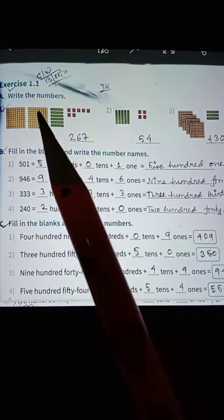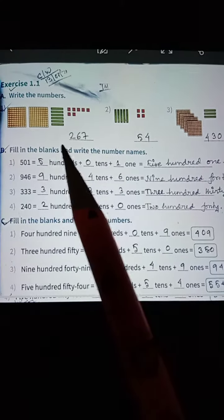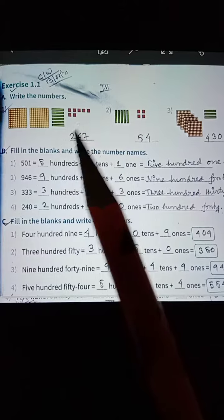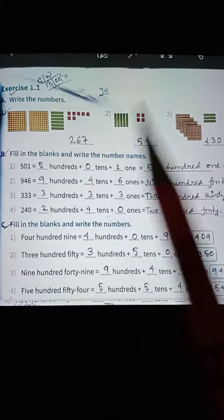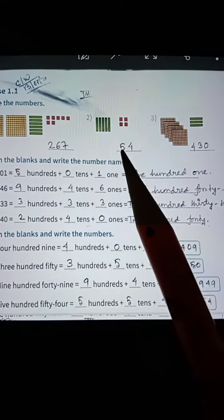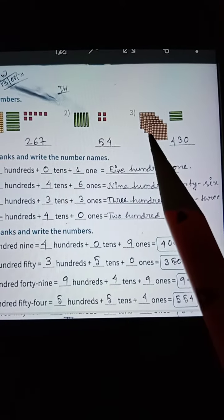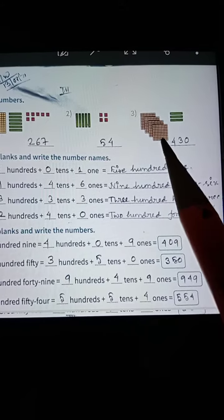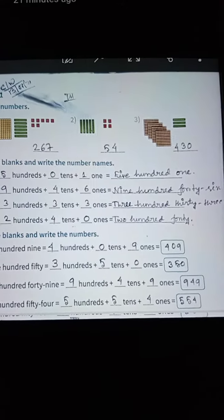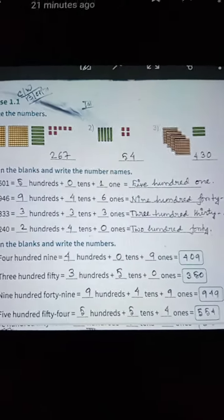Write the numbers. You have to count here 100, here 100, here 7, here 6, so 267. Now here is 1, 2, 3, 4, 5 and 4, so 54. And here is 100, 200, 300, 400 and 1, 2, 3, 30, so 430.